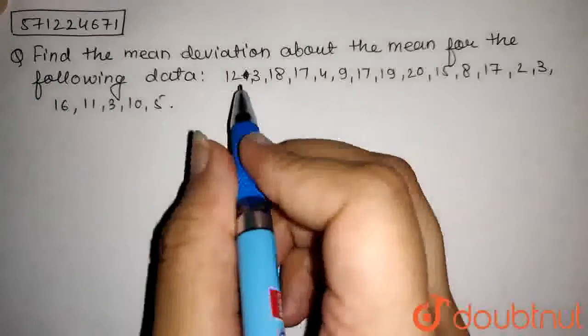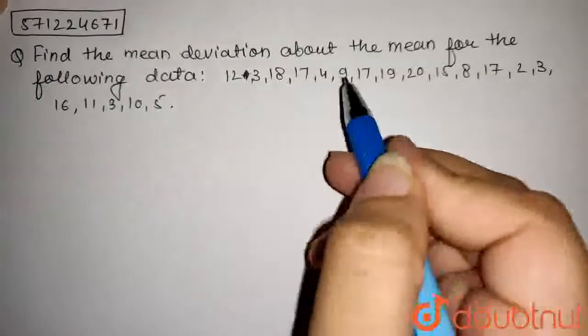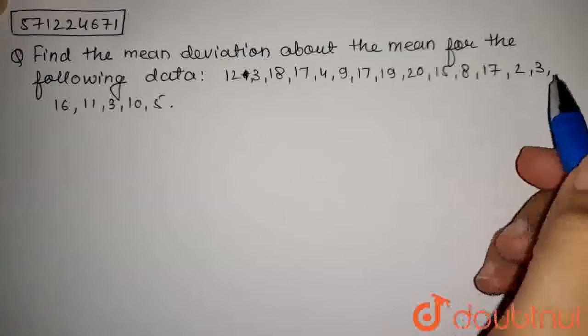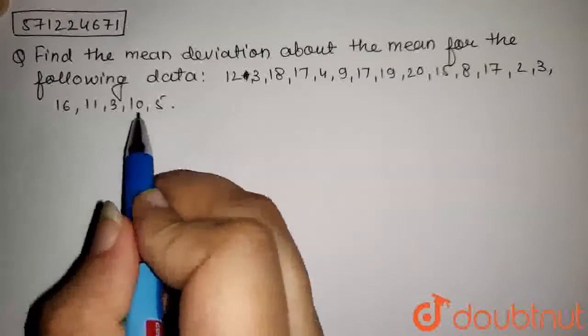Now, the data here is 12, 3, 18, 17, 4, 9, 17, 19, 20, 15, 8, 17, 2, 3, 16, 11, 3, 10, and 5.